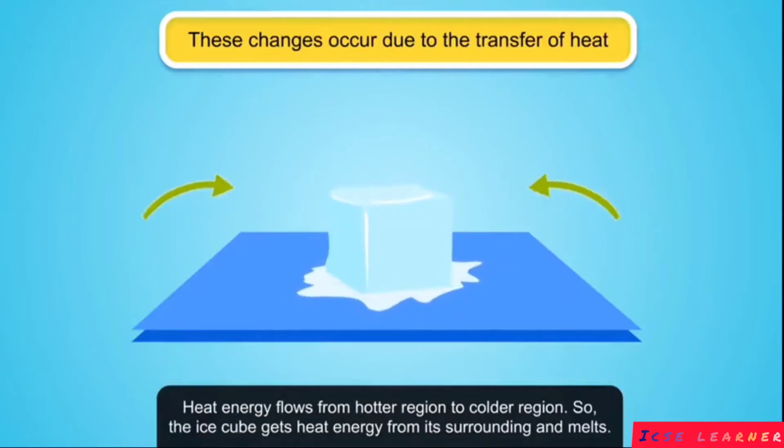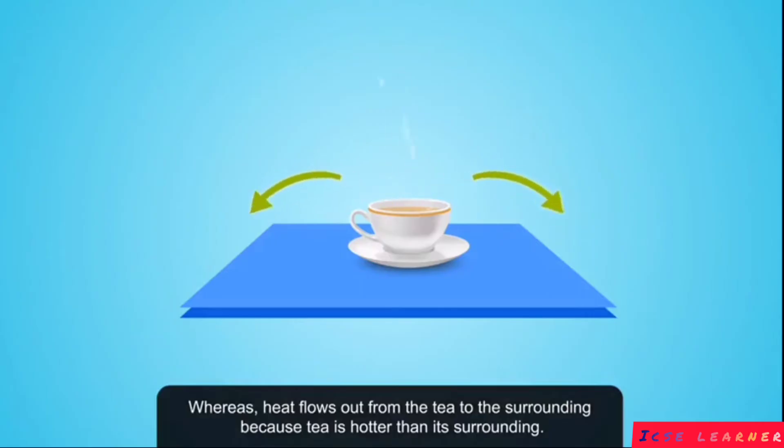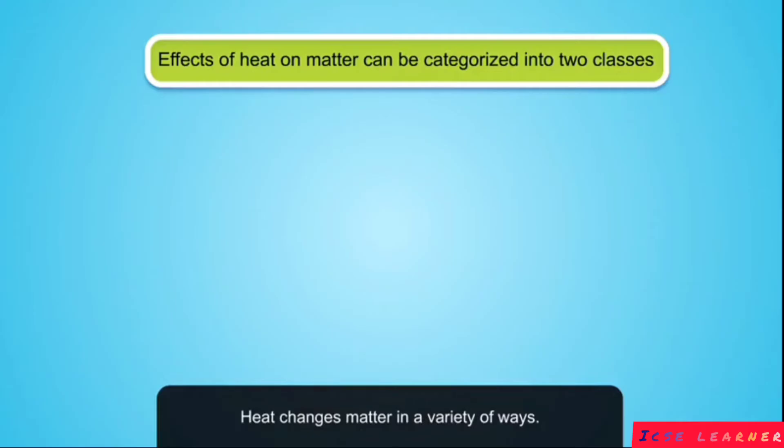Heat energy flows from hotter region to colder region. So the ice cube gets heat energy from its surrounding and melts, whereas heat flows out from the tea to the surrounding because tea is hotter than its surrounding.